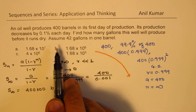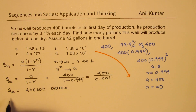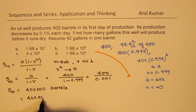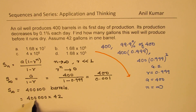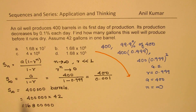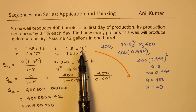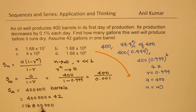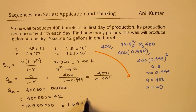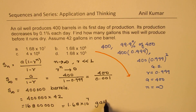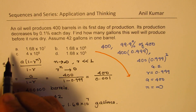Now we need to find how many gallons. We are also given that there are 42 gallons in one barrel. So that is equal to 400,000 times 42. When you multiply, you get 1.68 into 10 to the power of 7 gallons. So we get option A as the right answer.